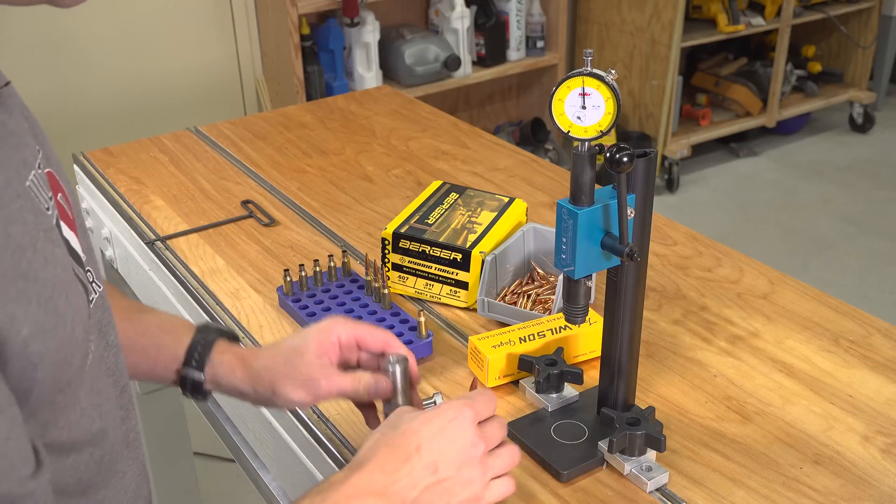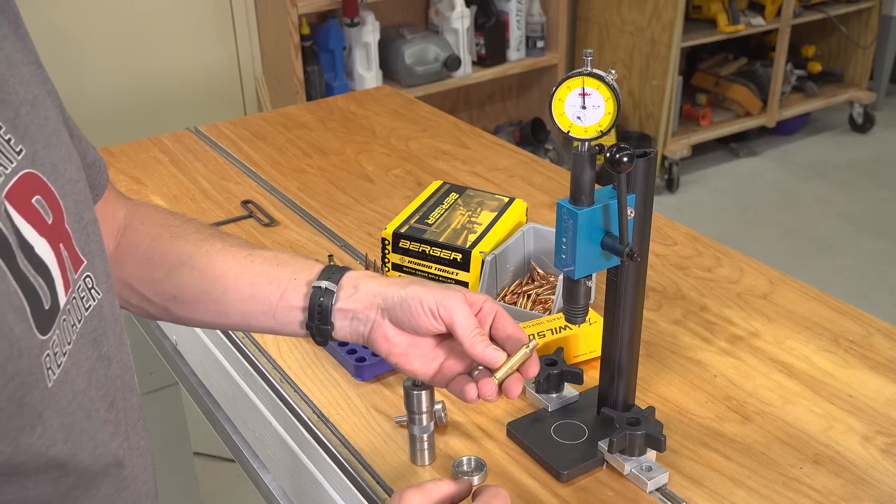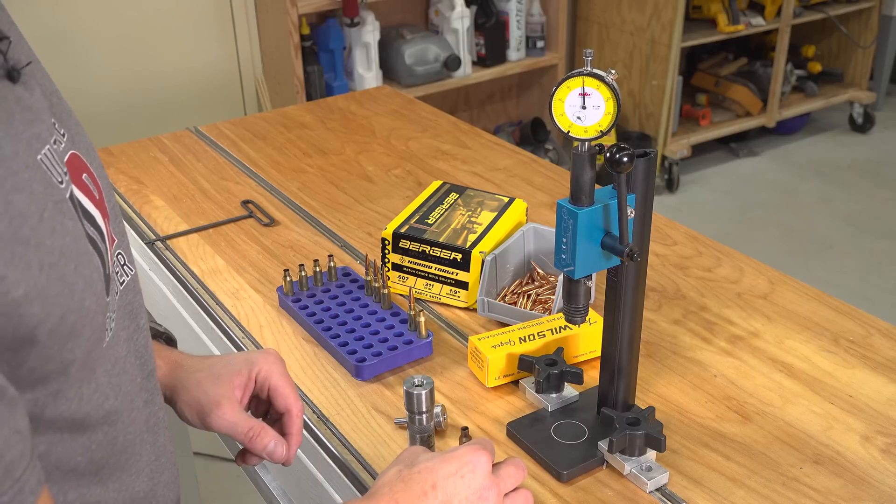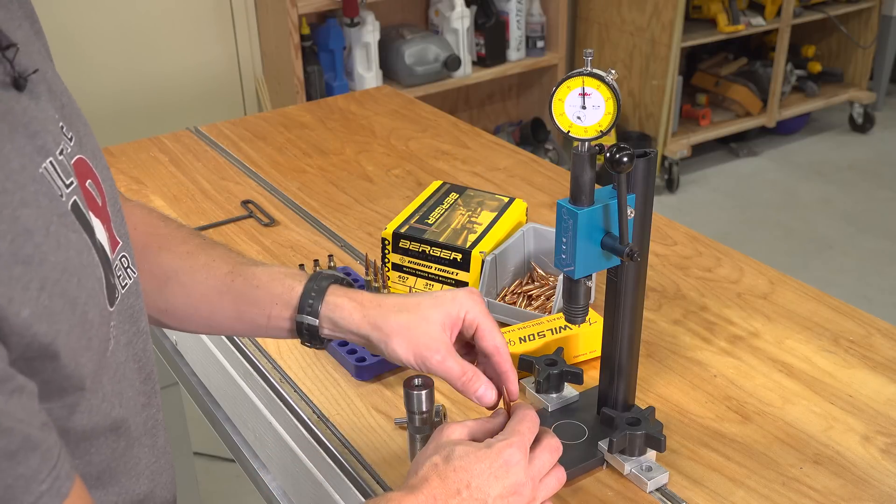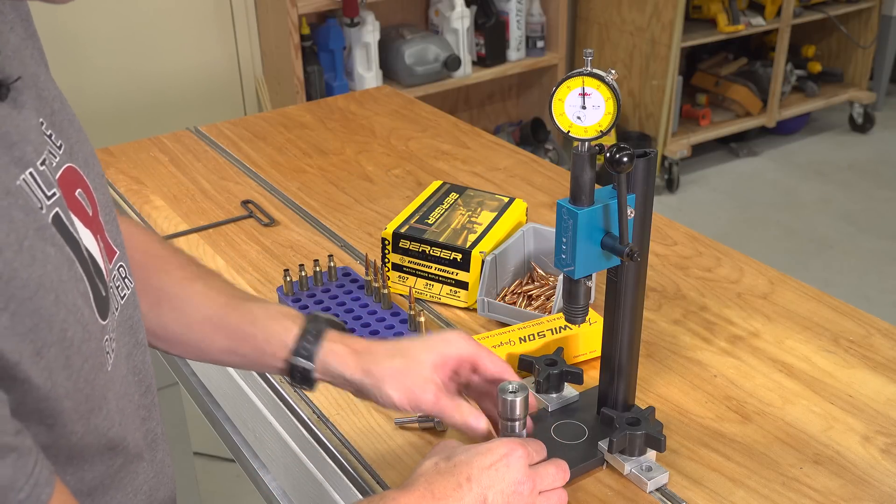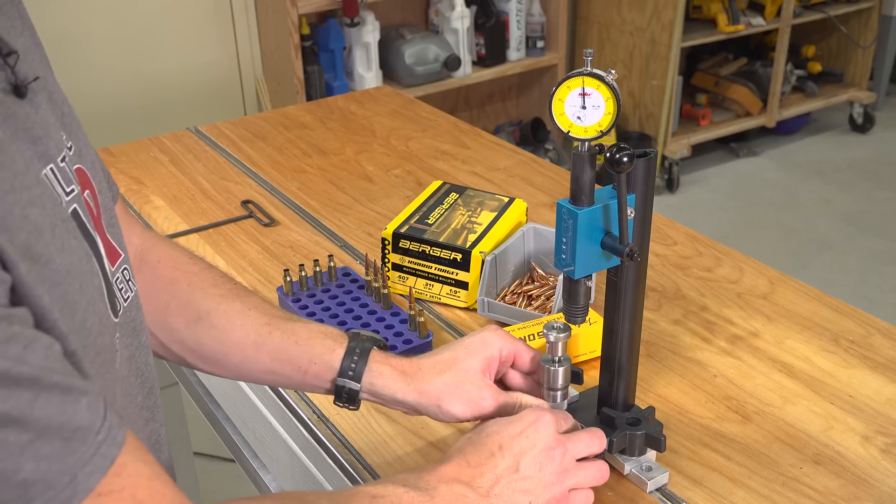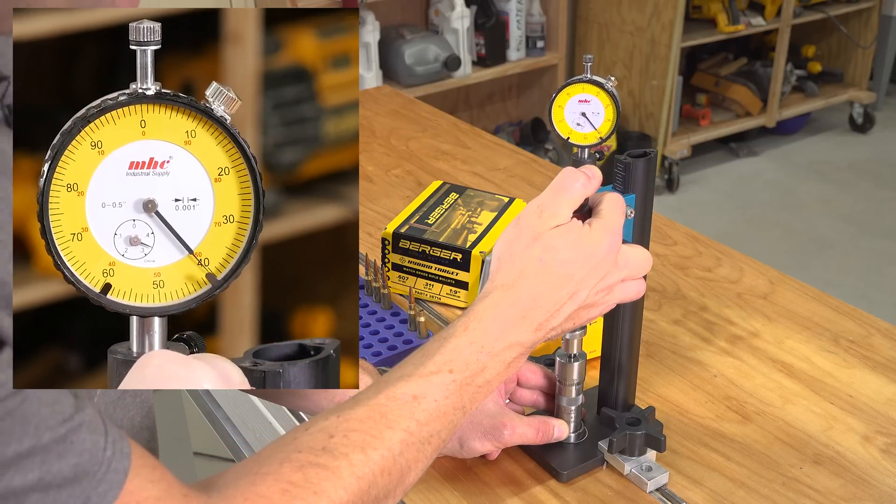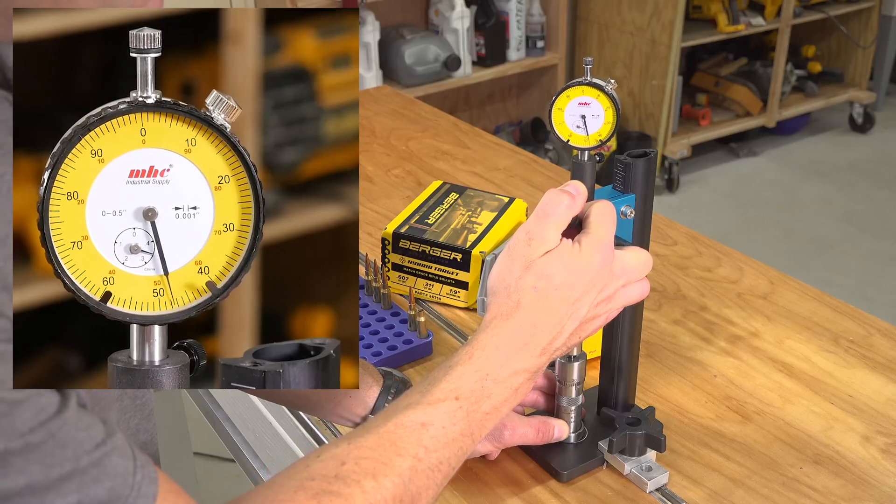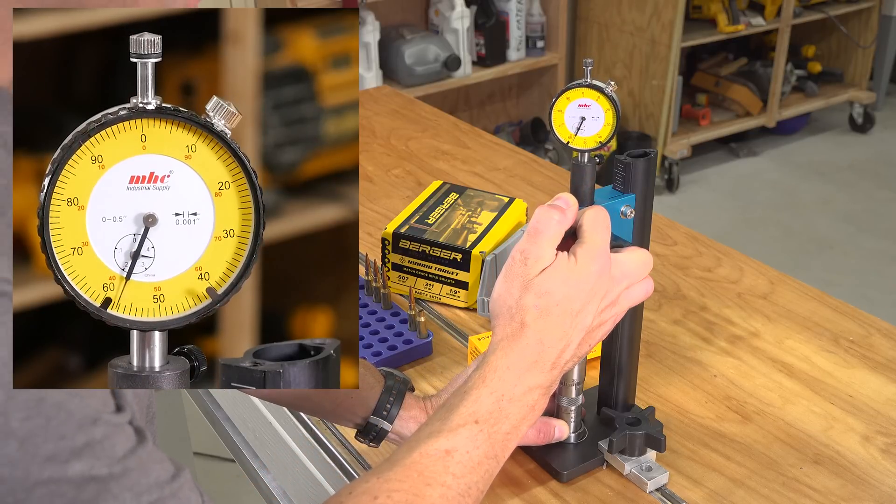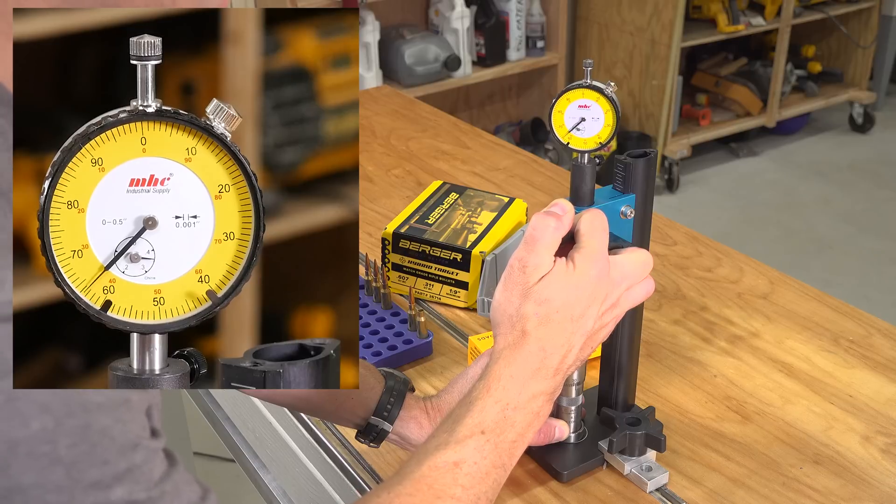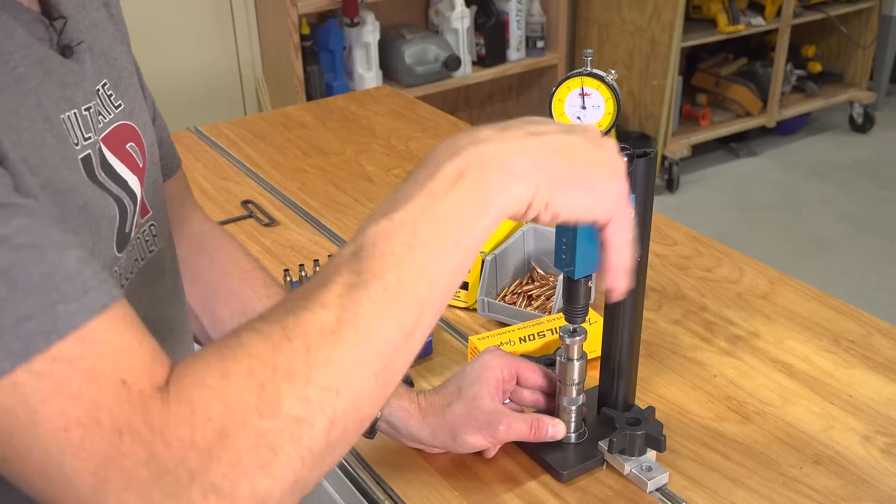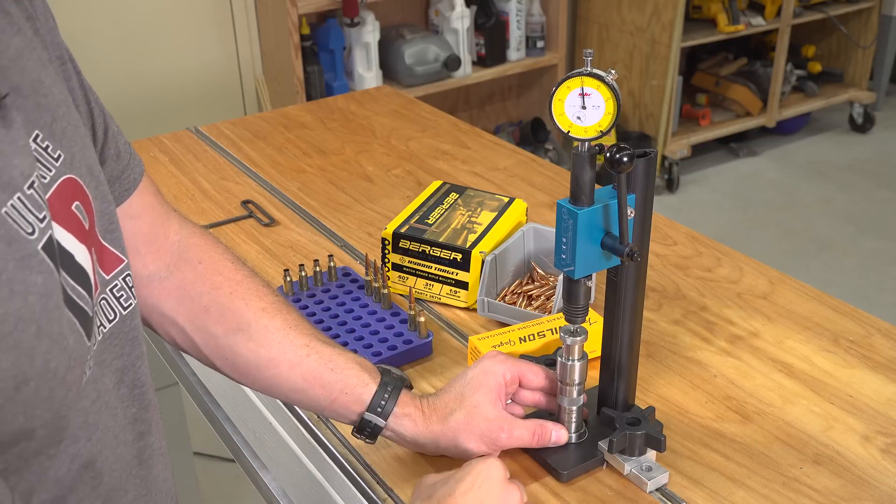Now let's take a look at previously fired, one time fired, full length sized Starline 6.5 Creedmoor brass. Let's see if there's any difference for a typical reloading scenario. And here we go, break free was a little over 20. I felt it move there. And here we are, 50, 60, 70, there we go. And that was, you saw it give away there. That was when it seated all the way down.